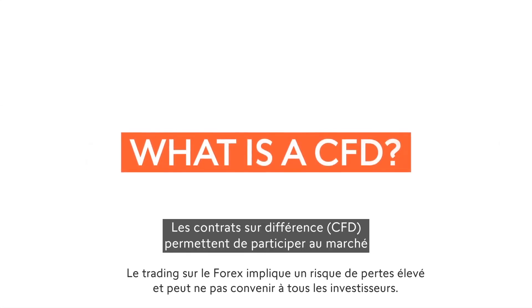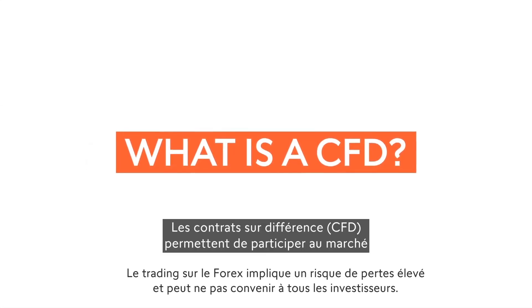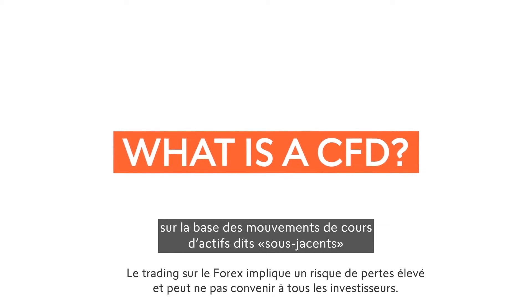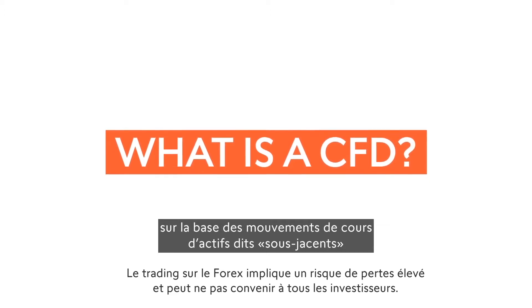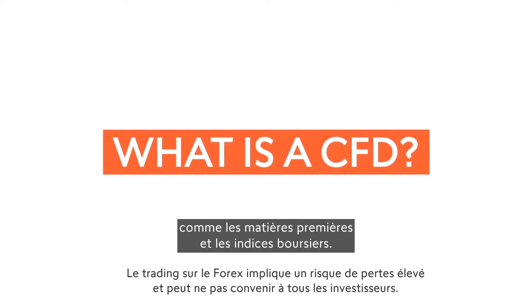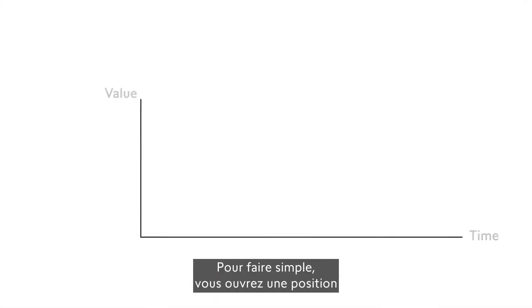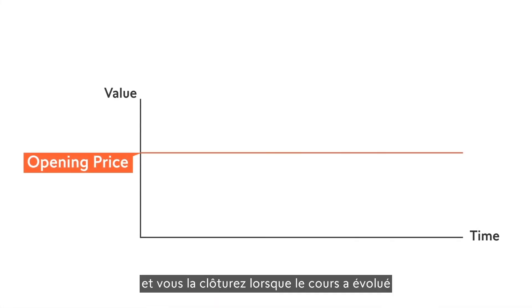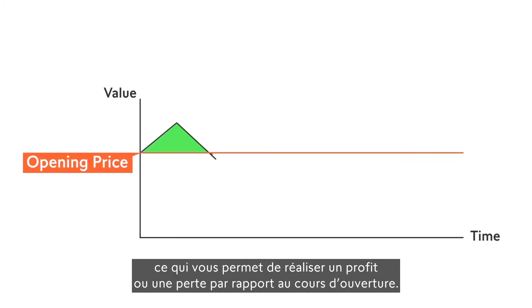Contracts for difference, or CFDs, are a way to participate in the market based on the price movements of so-called underlying assets such as commodities and stock indices. Simply stated, you open a position and close it again when the price has moved, making a profit or loss compared to the opening price.